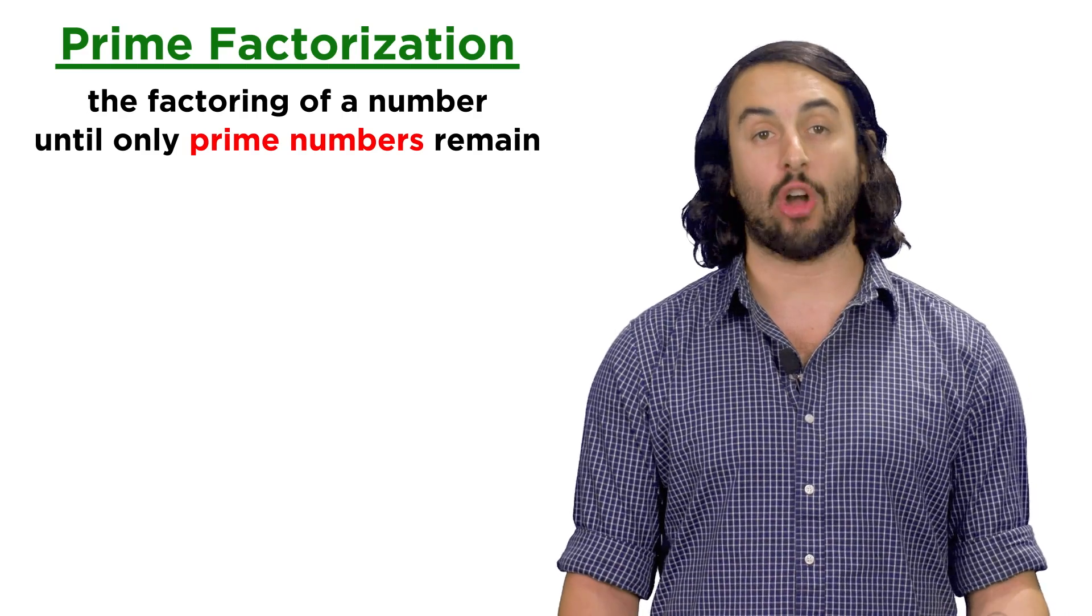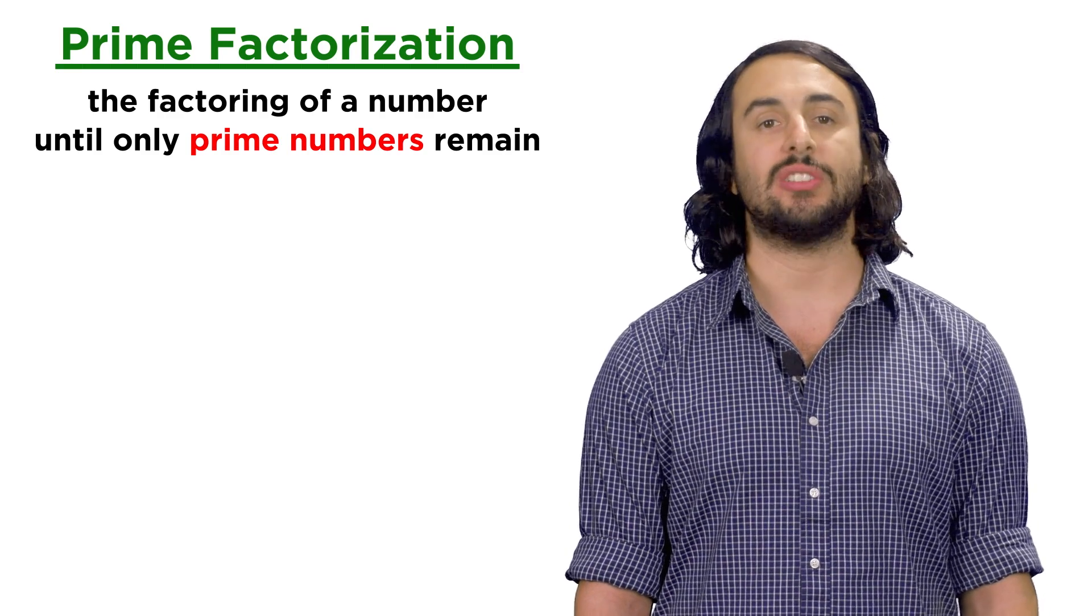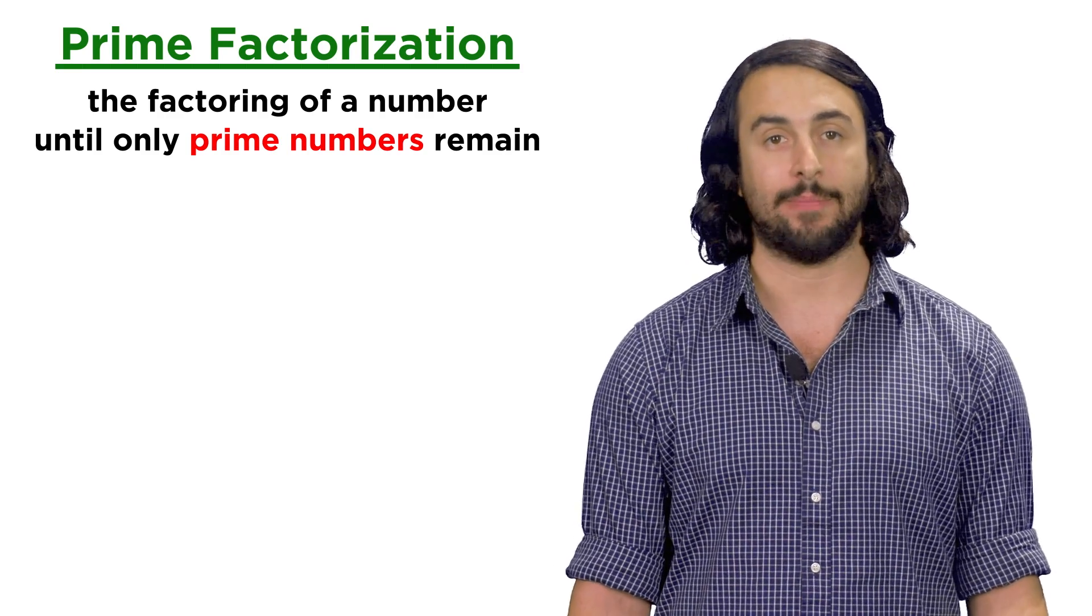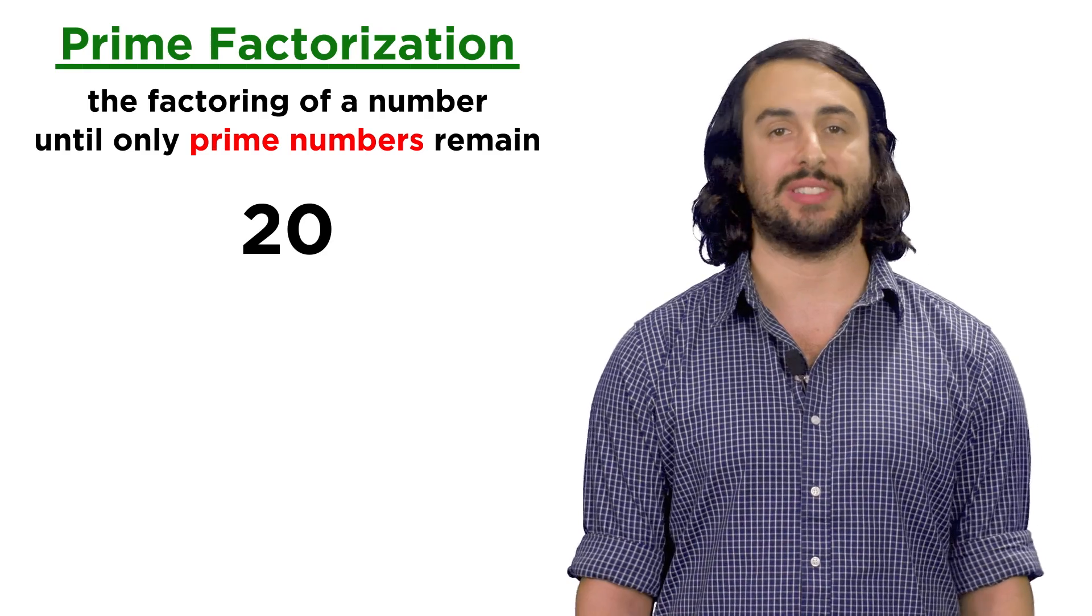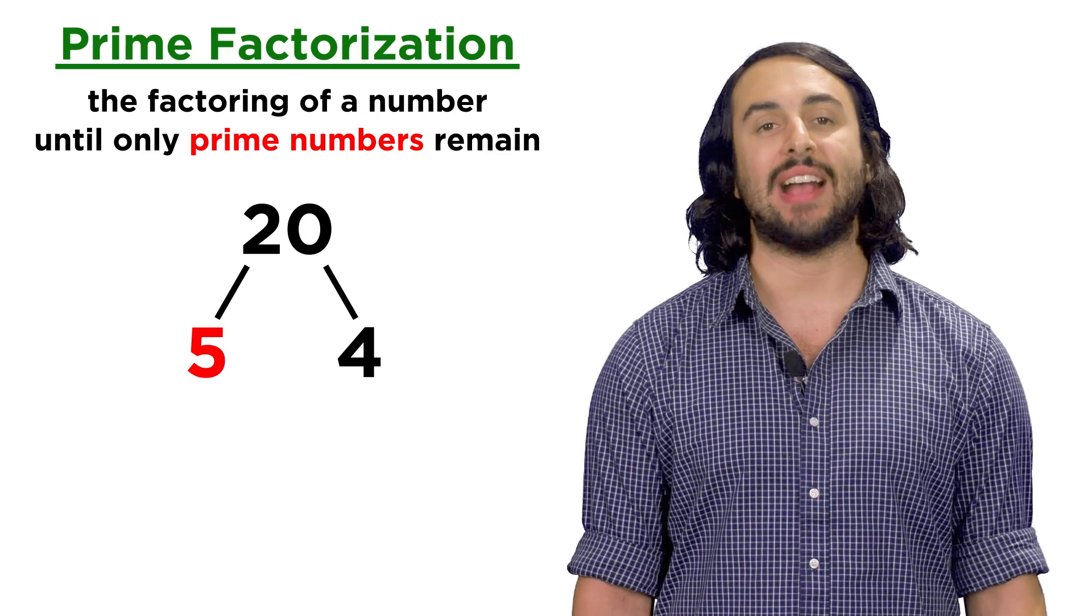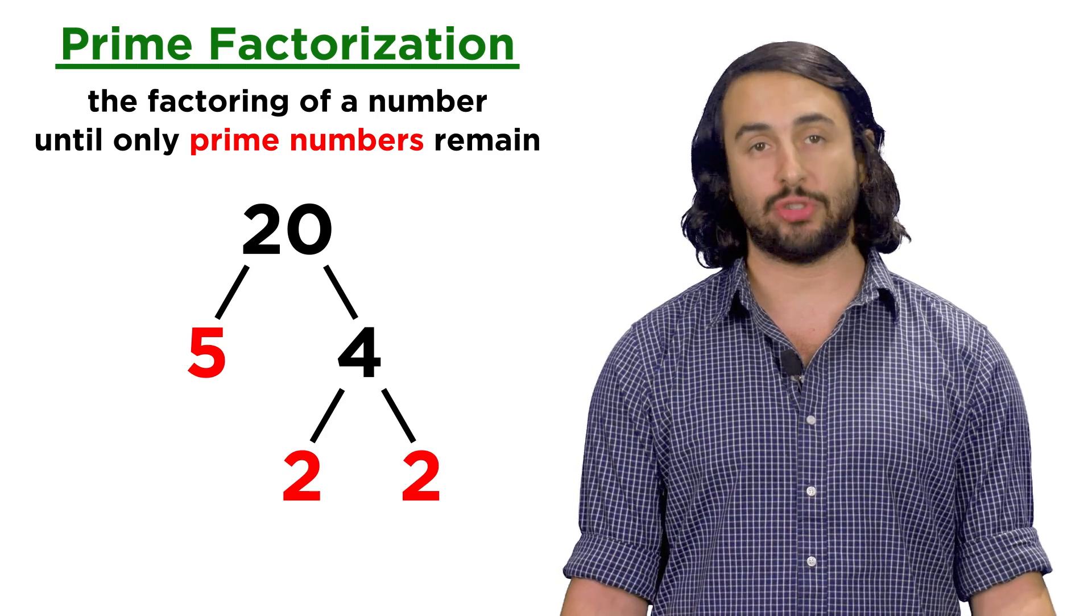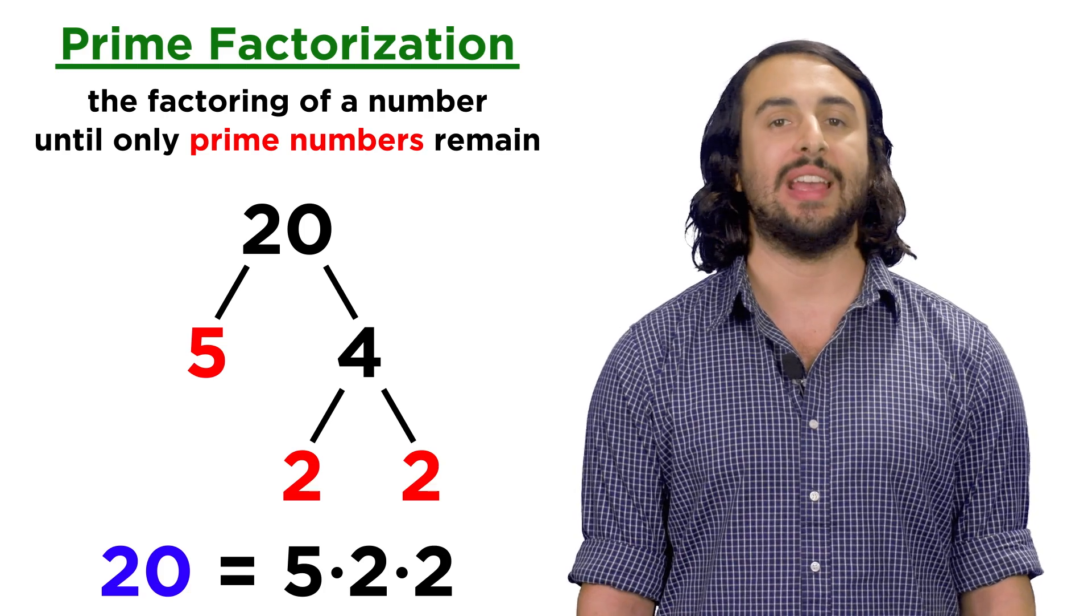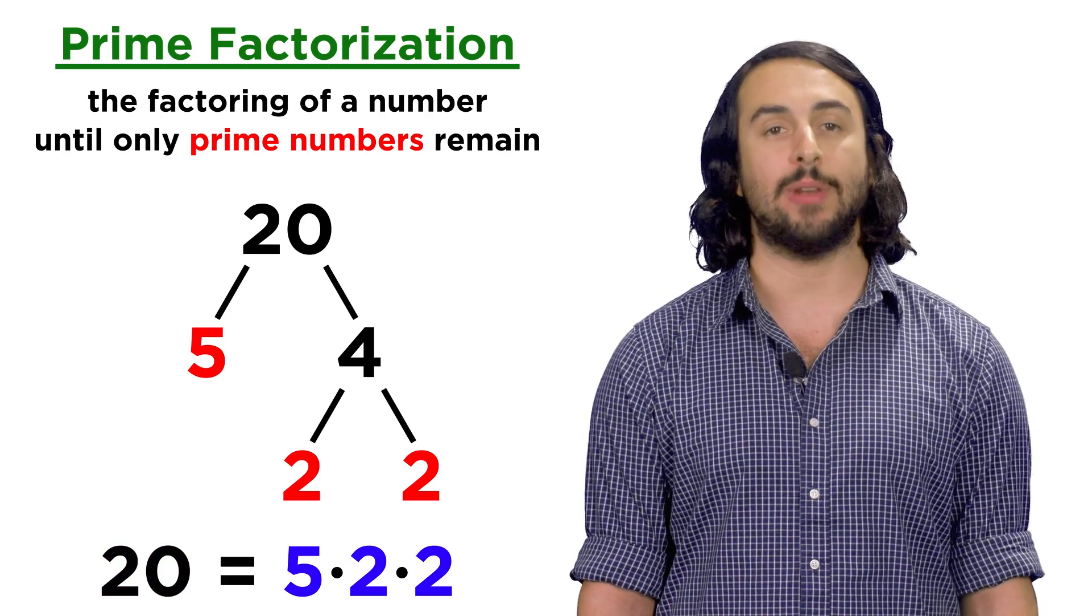So now that we know what prime numbers are, we can understand why we must factor numbers until only prime numbers remain, since that's the farthest we can go. Take twenty for example. We could represent that as five times four, and four can be represented as two times two, so factoring twenty gives us five times two times two, which are all prime numbers.